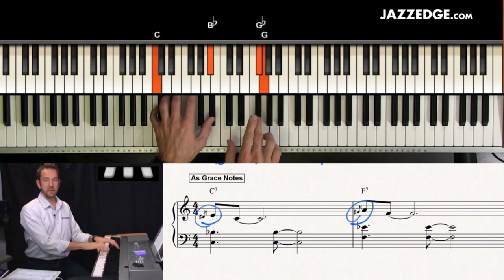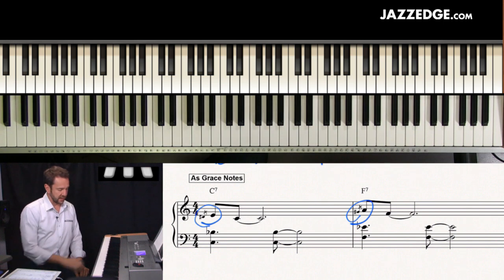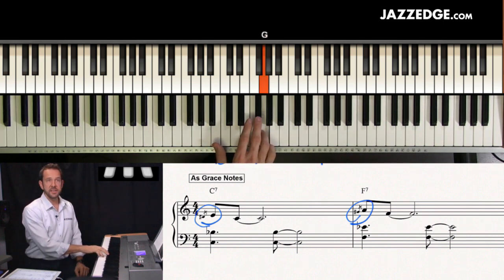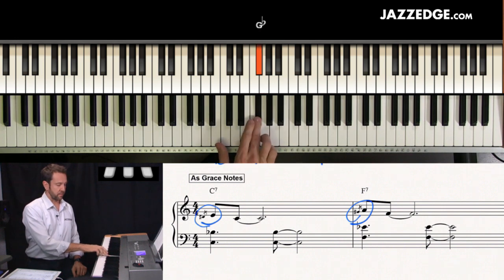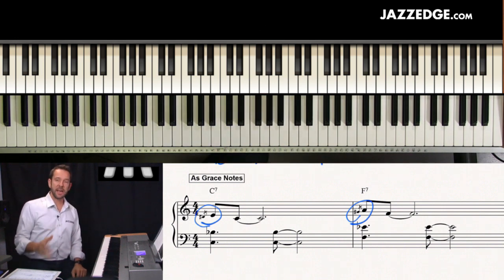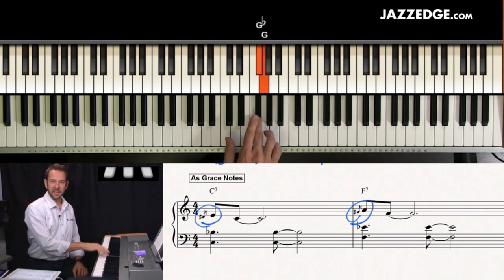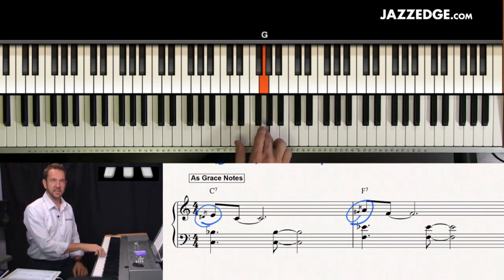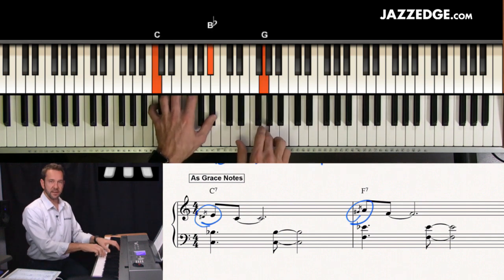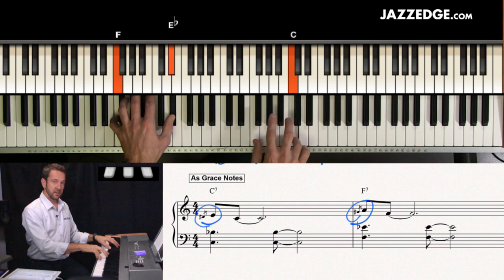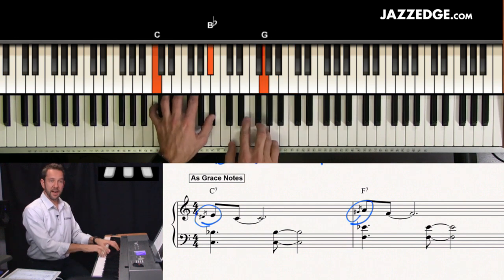Now, one question students have a lot of times is, can I use different fingers? So can I use like my fourth finger up to my, or middle finger up to my fourth finger? You can, but it kind of loses a little bit of that grit, doesn't it? So you got to like work a little extra hard. So that's why a lot of times I'll use the same finger like that. So I can combine them.